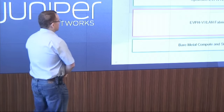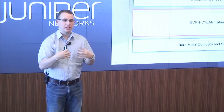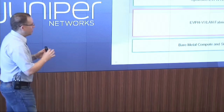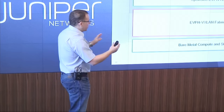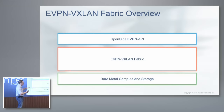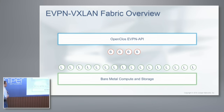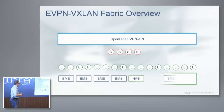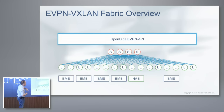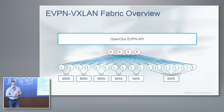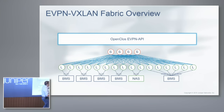The next use case is the EVPN VXLAN fabric, focusing more internally in the data center. Inside the data center you have bare metal servers or virtual servers, storage, and so on, all connected through this EVPN VXLAN fabric. We see a spine-and-leaf topology. We create a full mesh on the spine and leaf, and we want redundancy to the servers — whether it's dual-homed or multi-homed. So we've got two different variations of the access layer.